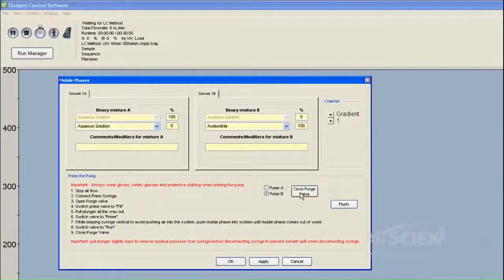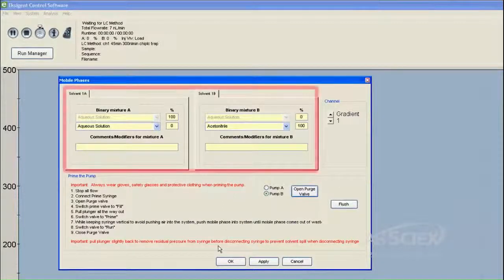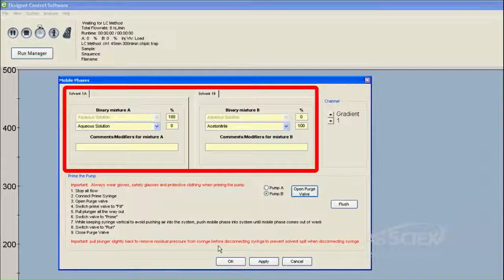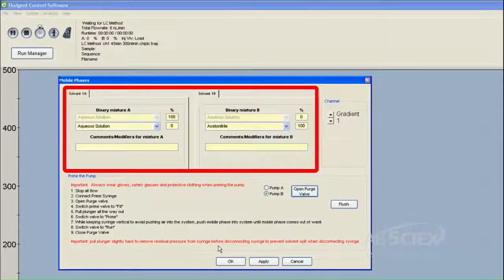Click the Close Purge Valve button. Verify that the mobile phases defined in the binary mixture sections are correct and match the solvent in the bottle. If necessary, change the mobile phases using the drop-down menus.